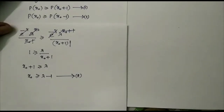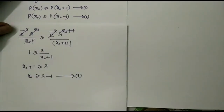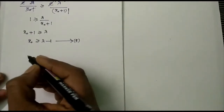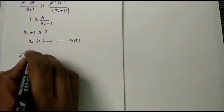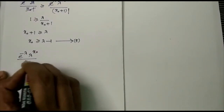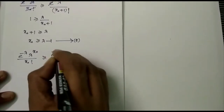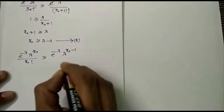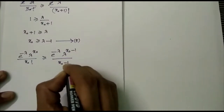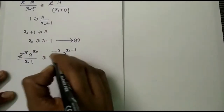Taking the second equation, P(x0) ≥ P(x0 − 1): we have e^(−λ) · λ^(x0) / x0! ≥ e^(−λ) · λ^(x0−1) / (x0−1)!. Cancelling e^(−λ) on both sides and simplifying the factorials and powers of lambda,